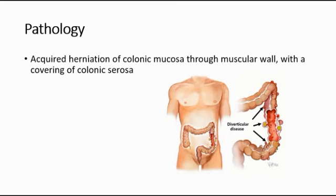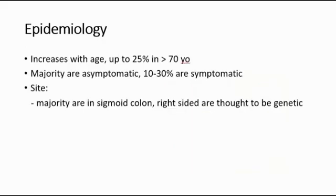For epidemiology, diverticular disease increases with age, so 25% of the disease happens in people who are older than 70 years old. Majority of the patients are asymptomatic; only 10-30% present with symptoms. The more common site is the sigmoid colon due to reduced luminal diameter and increased luminal pressure. If the diverticulum is at the right side, we think of it more towards a genetic cause.